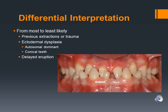Differential interpretations include previous extractions or trauma to teeth. Ectodermal dysplasia is also a differential interpretation, which presents with conical-shaped teeth as shown in the photo. Delayed eruption is also a differential interpretation, which is differentiated by looking at a radiograph.